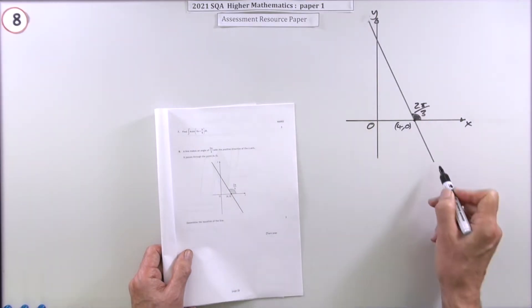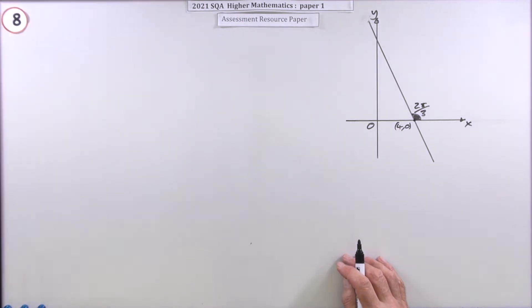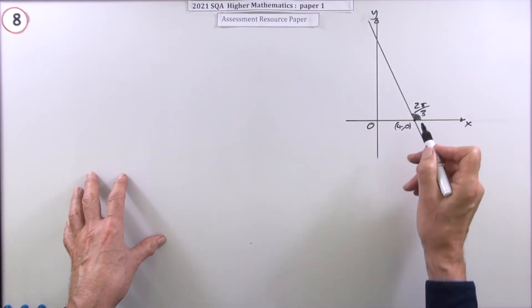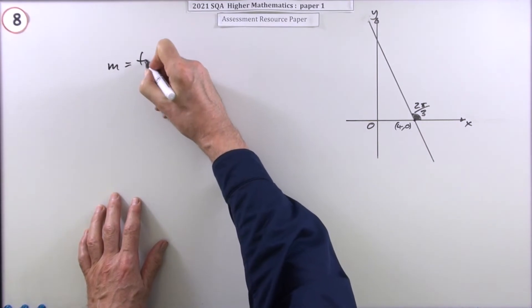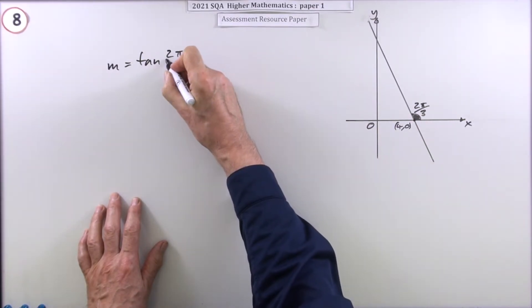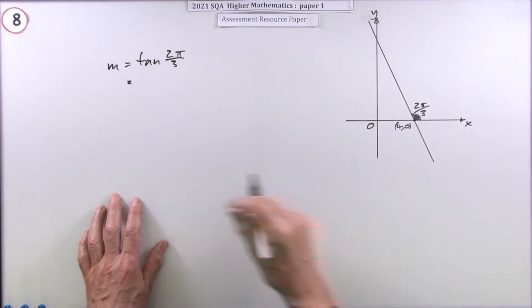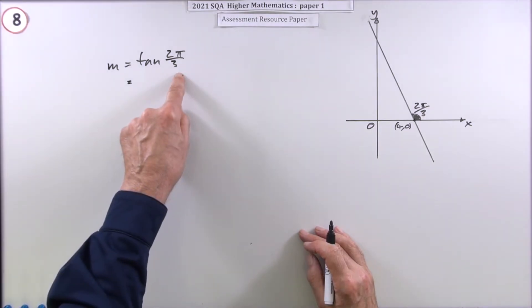So first step will be: what's its gradient? Well, the gradient is the tangent of the angle, so it'll be the tangent of 2π upon 3. You'll notice this is too big because it's more than a right angle, so you'll need to change that.